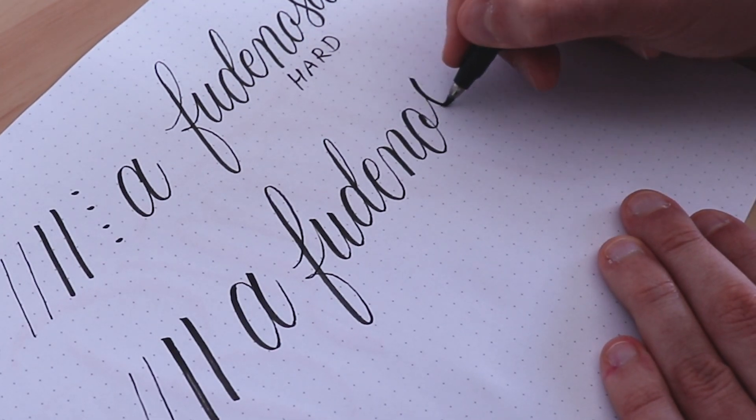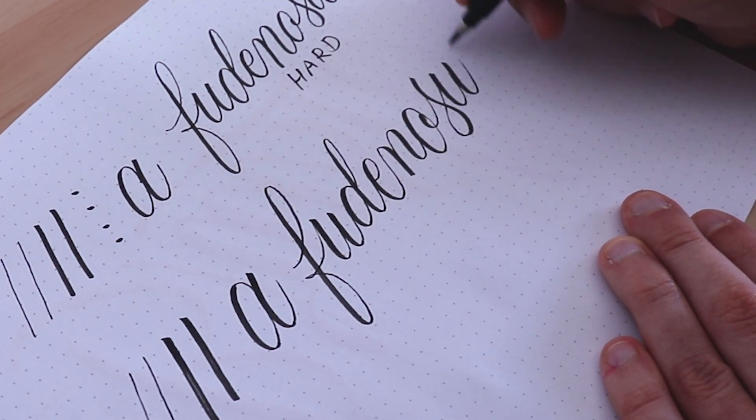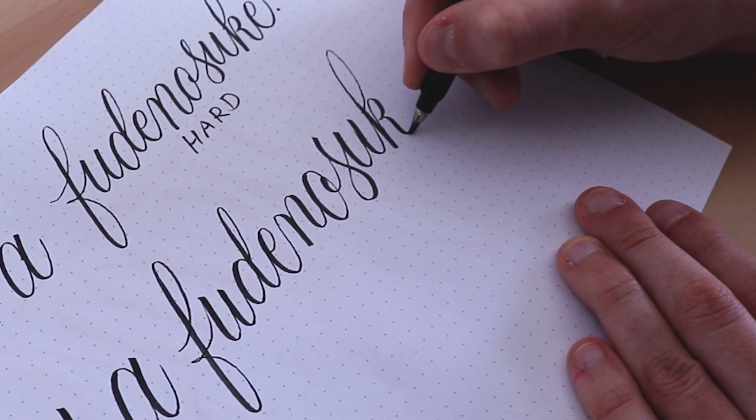Another cool thing about these brush pens is that they are made from recycled plastic which makes them at least partially environmentally friendly. Kudos to Tombow.